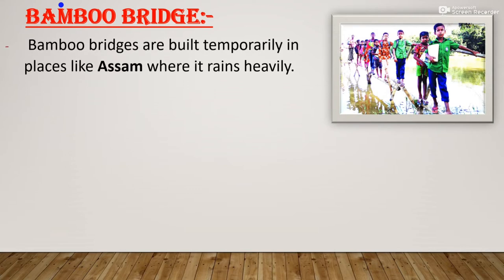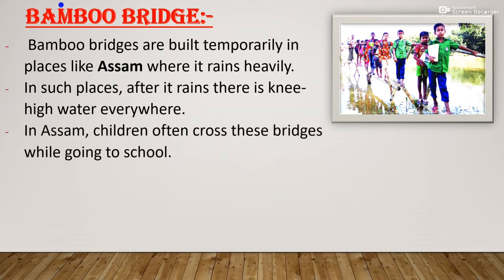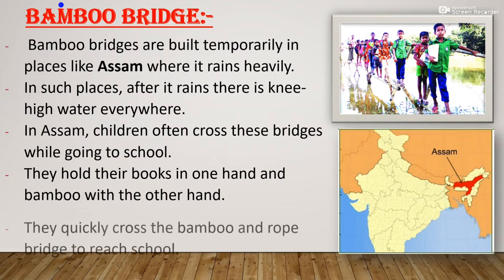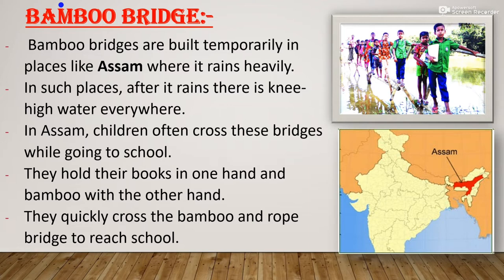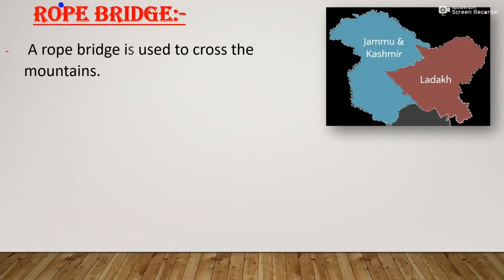Bamboo bridges are built temporarily in places like Assam where it rains heavily. After it rains there is knee-high water everywhere. In Assam, children often cross these bridges while going to school. They hold their books in one hand and a bamboo pole with the other hand and quickly cross the bamboo and rope bridge to reach school. For them it is easier because they are habituated to crossing it every day.